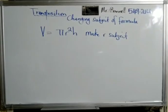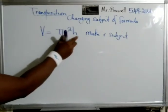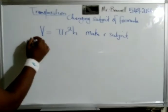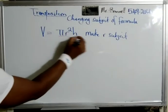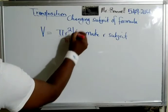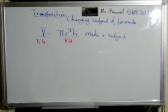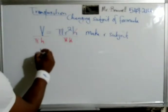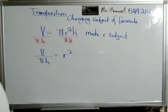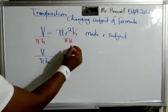We need to examine what's happening to r. We have pi times r and h times r, so the opposite of times would be divide. We divide by pi and h — what we do to one side we do to both sides. This leaves us with r squared equal to V over pi h.